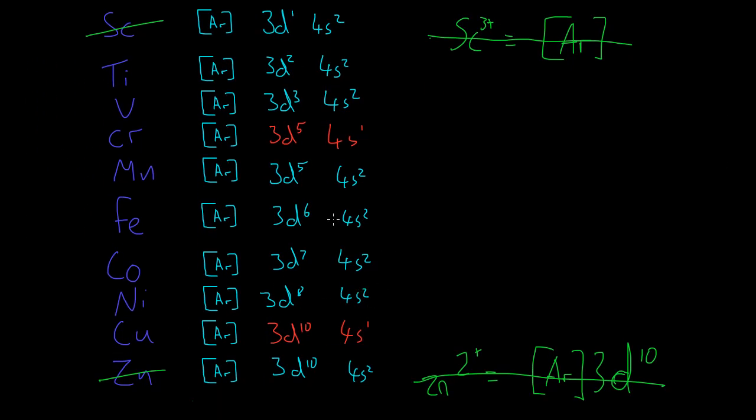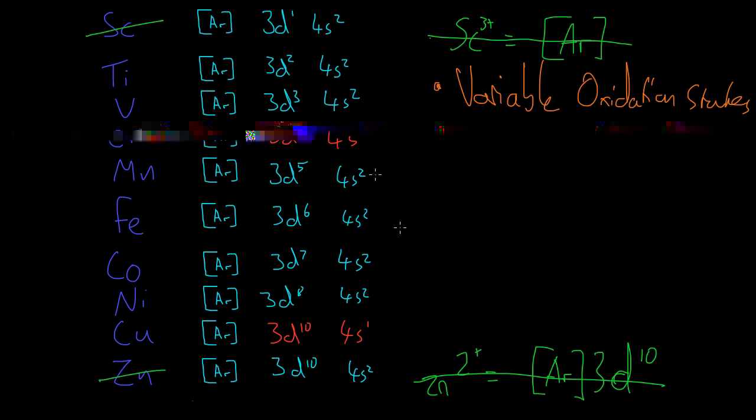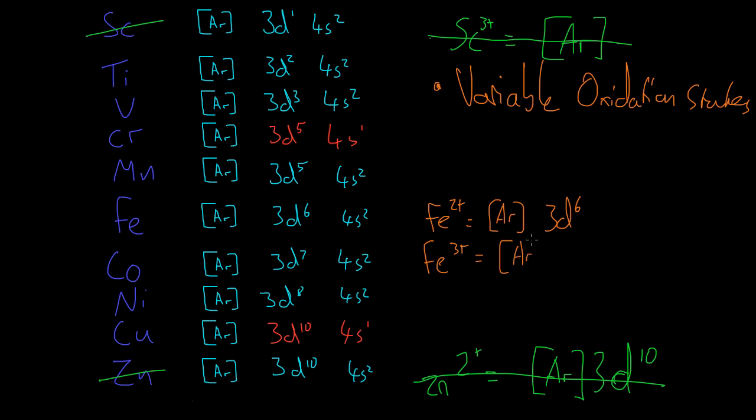So now that we can think of these in terms of these orbitals, we start seeing pretty cool properties come about. So the first of those properties is that we can have a variable oxidation state. And we get those because the 4s orbital and the 3d orbital are very close together and similar in energies. So we can lose electrons from both of them pretty easily. I mean that's why iron for example can form a 2+ and a 3+. It can either lose its 4s electrons to get a Fe2+ equals Ar 3d6 or it can form a 3+ ion to get 3d5.